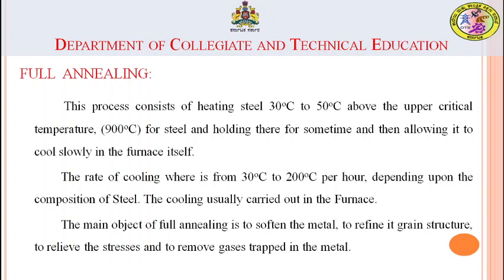In the full annealing process, the material is heated 30 to 50 degrees Celsius above the upper critical temperature, held at that temperature for some time, and then allowed to cool in the furnace itself. The rate of cooling varies from 30 degrees Celsius to 200 degrees Celsius per hour depending upon the composition of the steel, and cooling is usually carried out in the furnace.